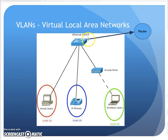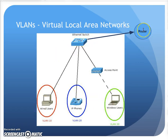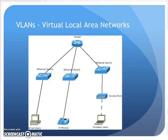I can accomplish the same thing by, on my switch, taking the handful of ports for the desktop users and configuring them to be VLAN 10, taking the IP phones and configuring them as VLAN 20, taking the access points and wireless users and putting those ports into VLAN 30. I then program the switch to recognize those three VLANs and pass that traffic to the router. The router understands these VLANs exist, and I can write rules in the router to say yes, let them communicate, or no, don't let them communicate. That gets the same job done with less equipment.